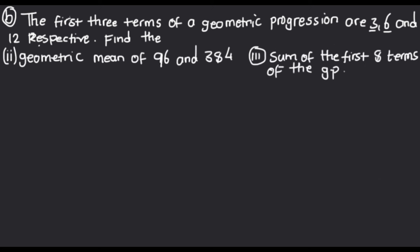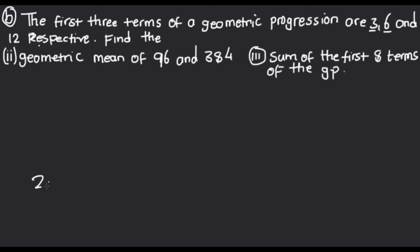Next we want to find the geometric mean of 96 and 384. If we have a sequence like 2, 4, 8, the common ratio is 2. If we remove the middle term and have 2 and 8, the geometric mean is the middle number of two consecutive terms. If we label them a, b, c, then b is the geometric mean.